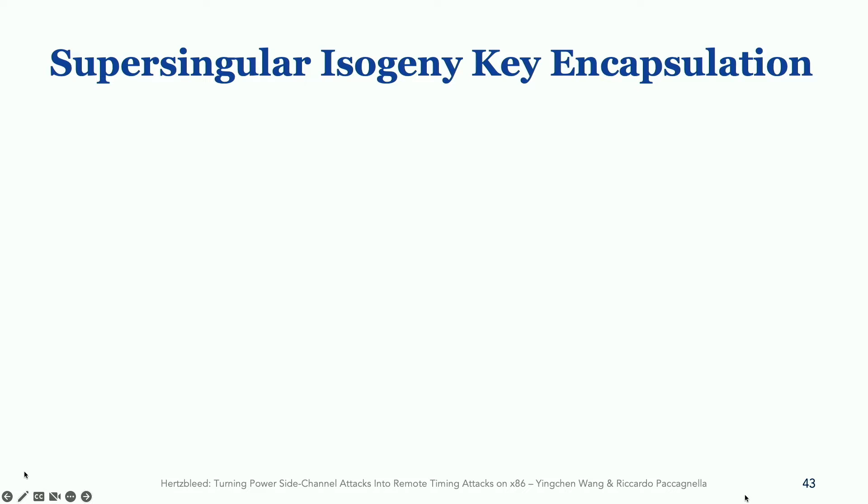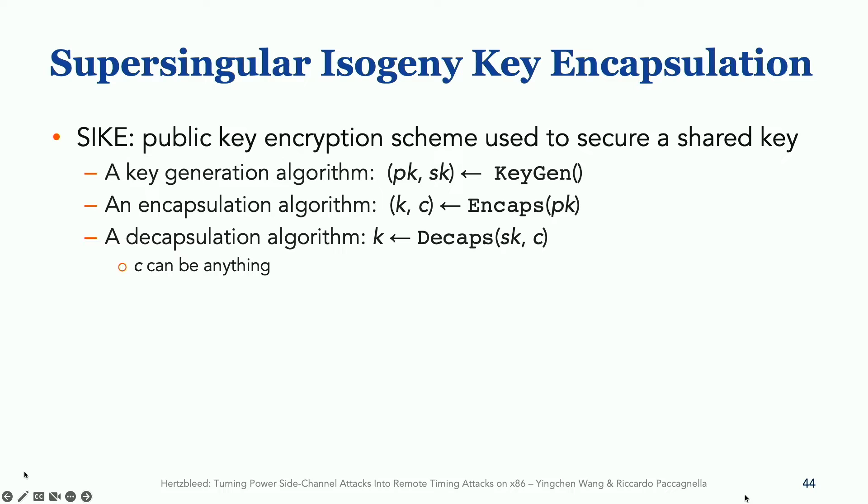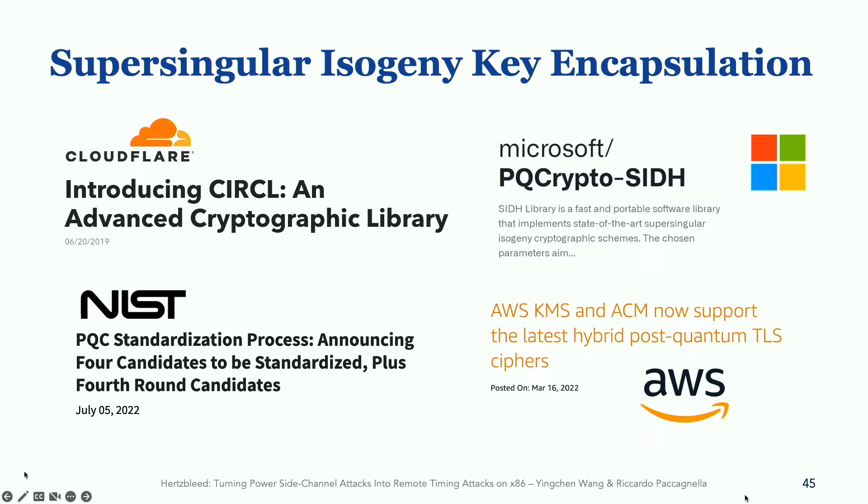Inside the second part of the talk, we show how to use Hertzbleed to mount remote time attack on a post-quantum key encapsulation scheme called SIKE, supersingular isogeny key encapsulation, by turning a power side channel into a timing analysis. SIKE uses public key encryption scheme to secure a shared key. We focus this on the decapsulation algorithm that takes in the secret key as well as the cipher text and outputs the shared key K. One thing to note here is that this C can be anything. It can come from an honest user or a malicious attacker. SIKE is a widely studied post-quantum key encapsulation scheme. It has production-ready implementation from Cloudflare and Microsoft. It was deployed by Amazon as a hybrid encryption scheme. And it is in the round four of NIST post-quantum crypto competition.